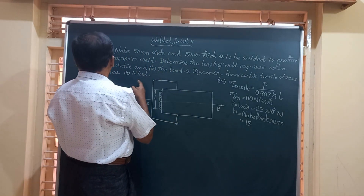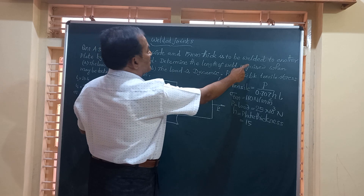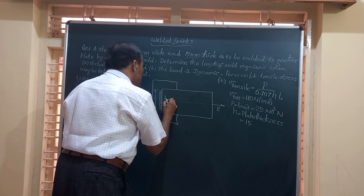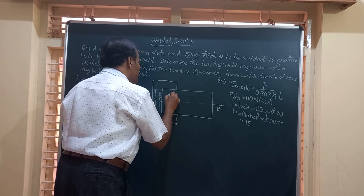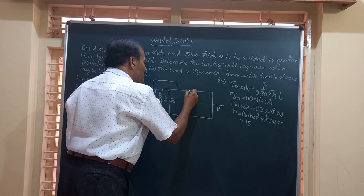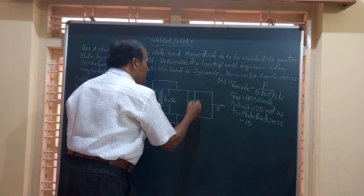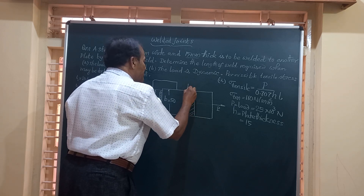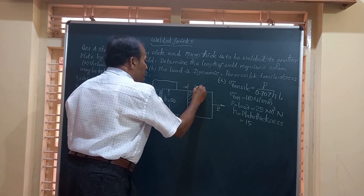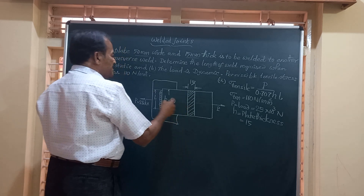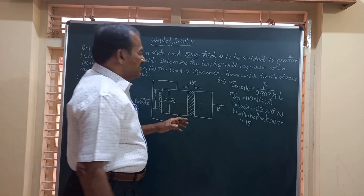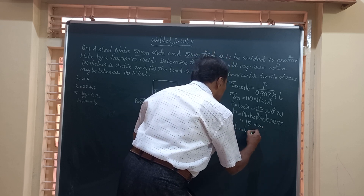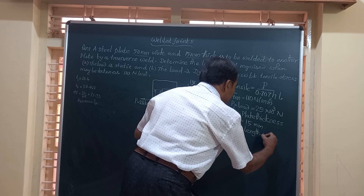The plate thickness is given as 15mm and the width B is equal to 50mm. The cross-section shows thickness of 15mm and width of 50mm. L is the length of the weld that is to be found.